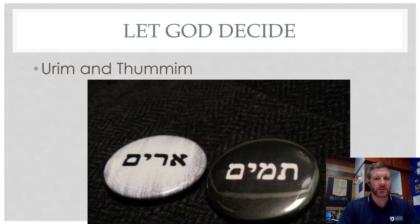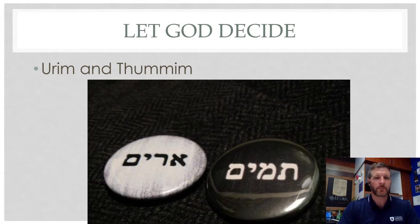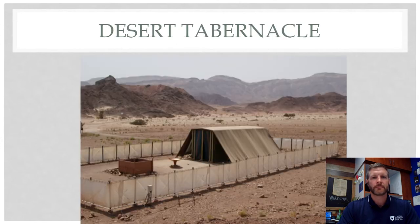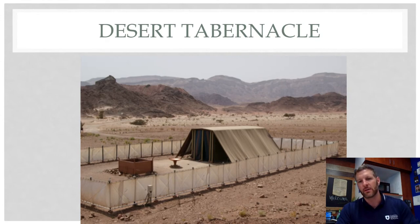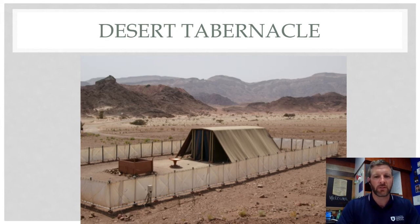There is a depiction of the Urim and the Thummim — kind of showing God agrees or God does not agree. Here is a recreation of the tabernacle. You can see the altar — the barbecue out front — along with the bronze laver. Inside would be the holy place, and then there would be a second curtain separating the Holy of Holies where the Ark of the Covenant would be kept.